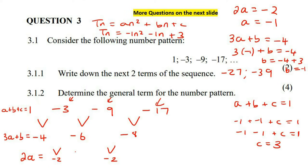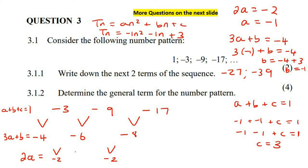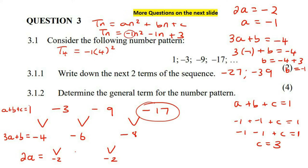Always go and check yourself. The way you check is you choose one of the terms — don't choose the first one, there's a higher chance of getting the same wrong answer. Choose something more complex. So let's choose position 4. Plug n equals 4 into the formula: negative 1 times 4 squared, minus 1 times 4, plus 3. That minus 1 is not part of the n, so it stays on the outside. We end up with negative 17. Because we're getting the same value, we're good.